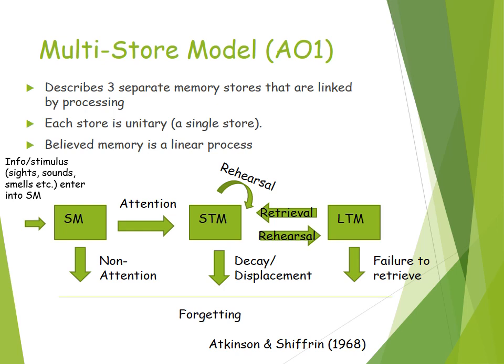Our long-term memory has unlimited capacity, duration potentially up to a lifetime, and coding or encoding is semantic — based on the meaning of words. Sometimes we need to retrieve that information via the short-term memory. If we fail to retrieve, it leads to forgetting. We'll discuss why we sometimes have failure to retrieve information — due to an absence of cues — at a later date.